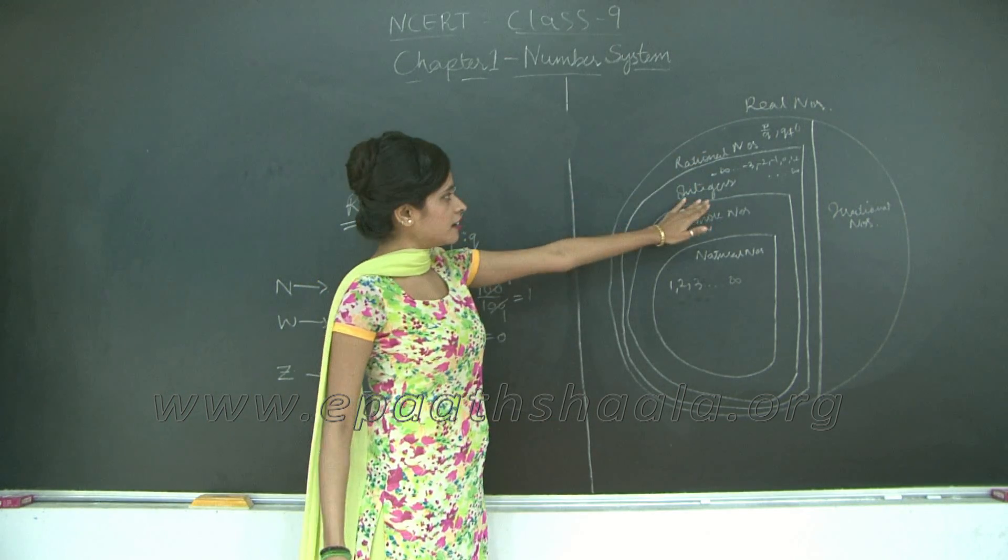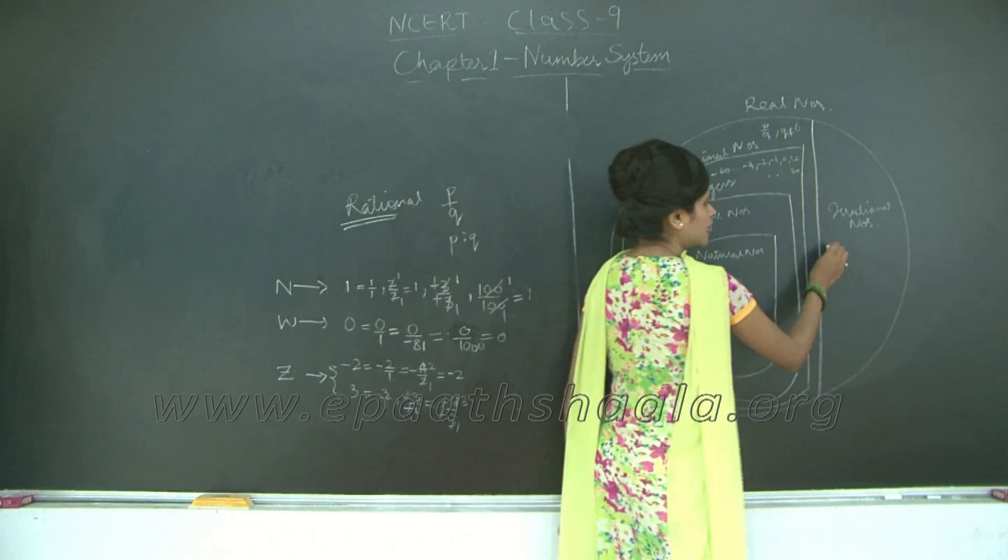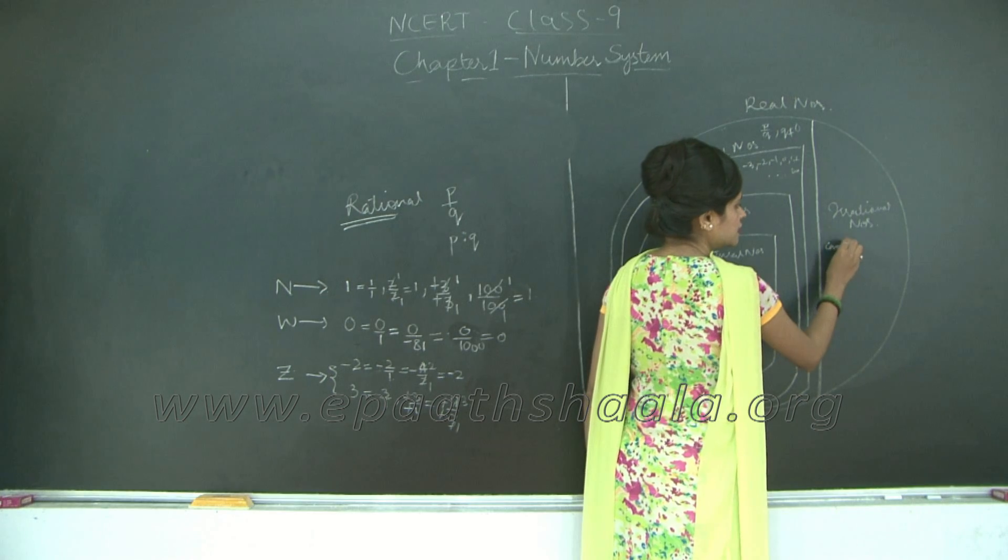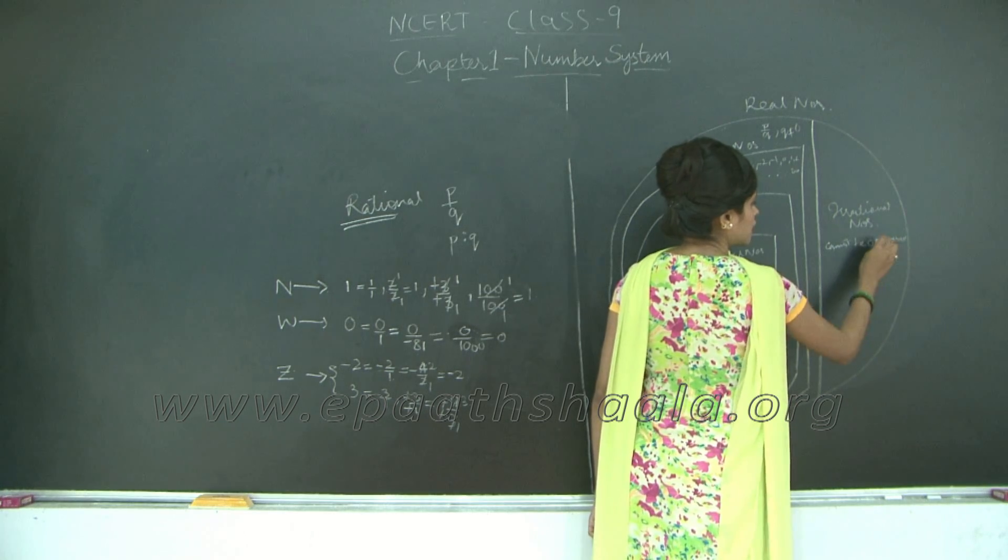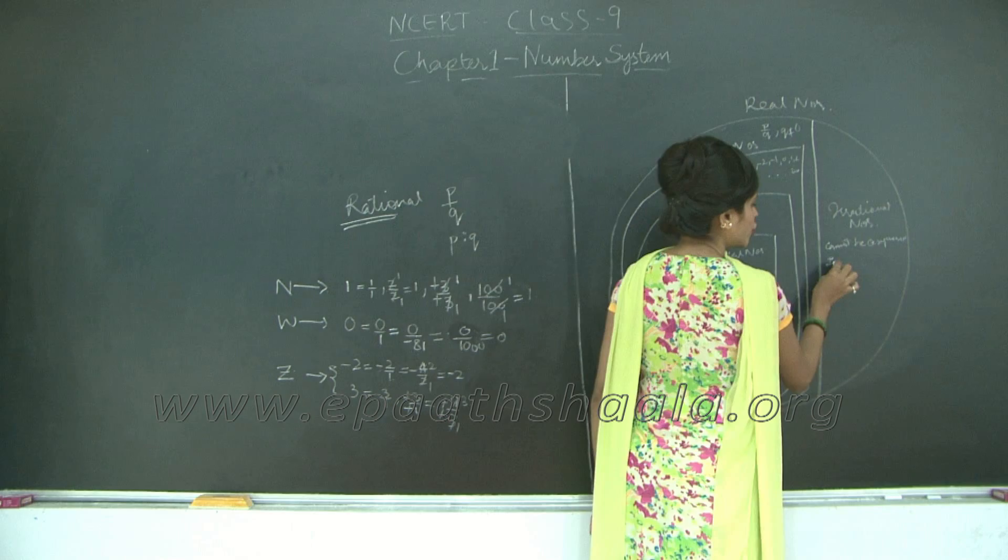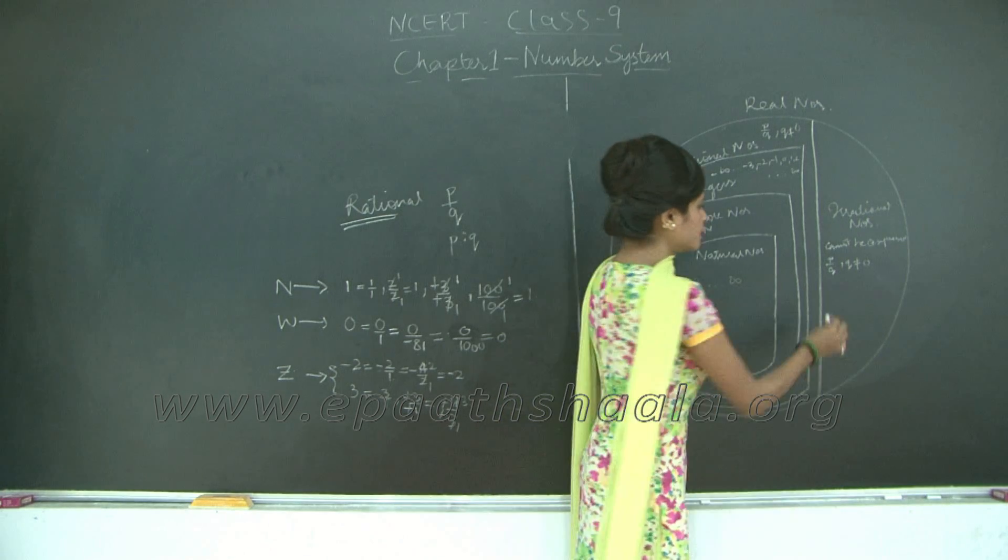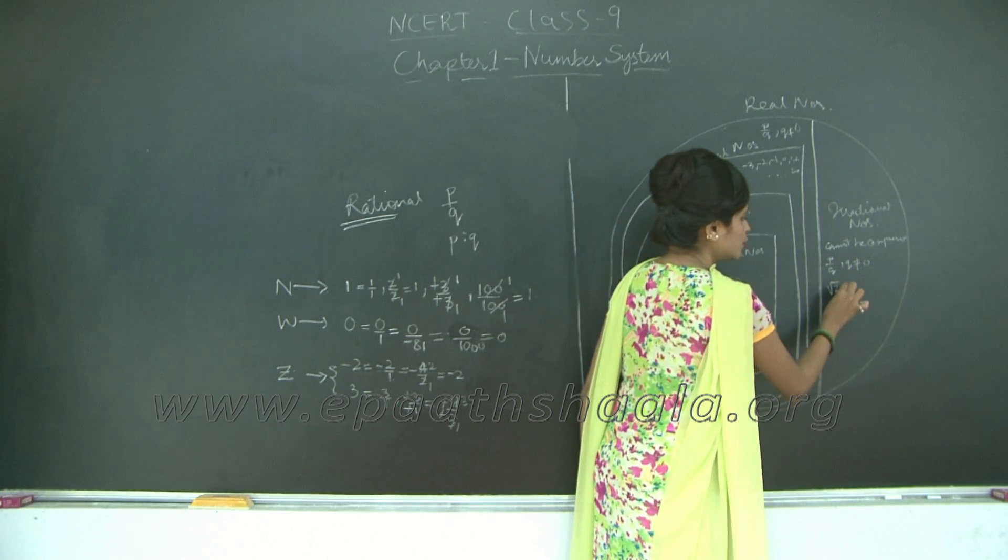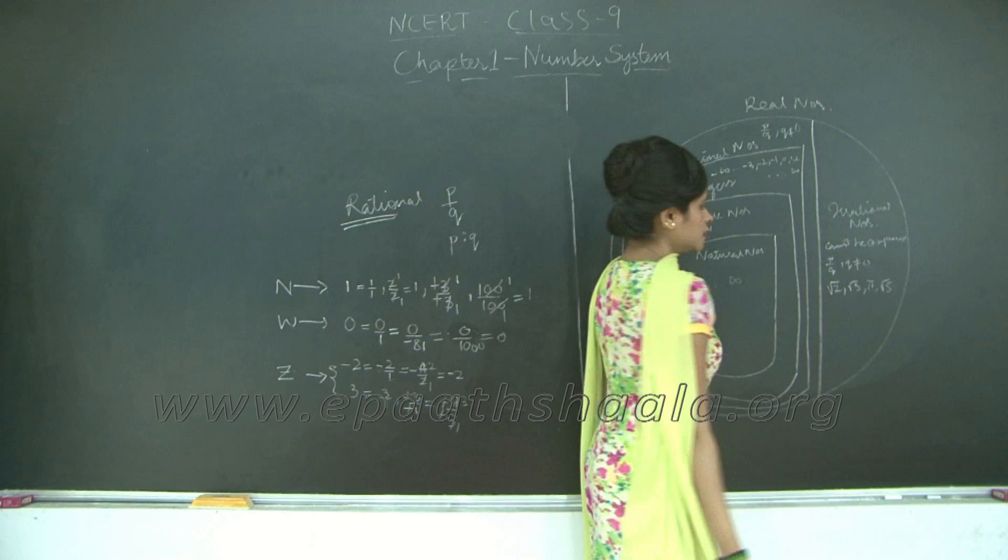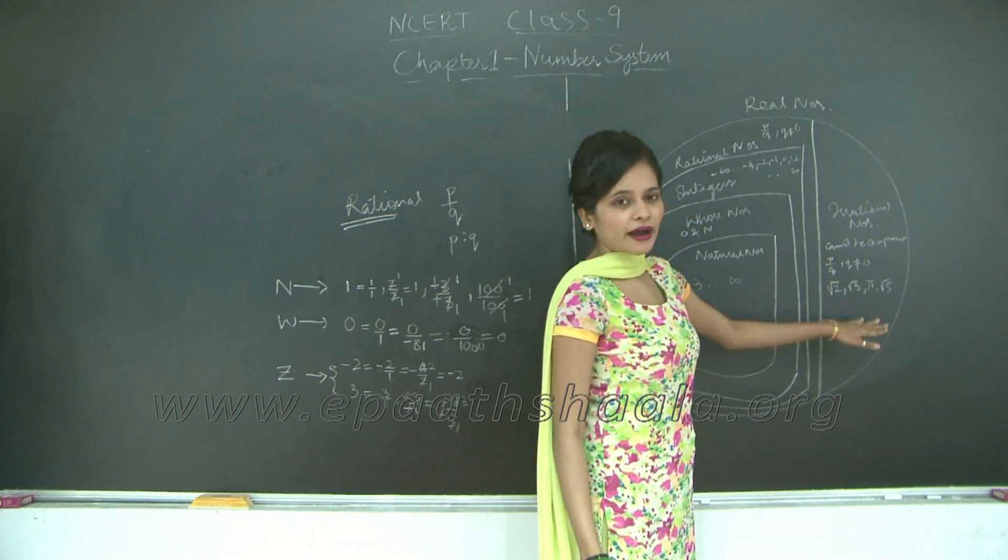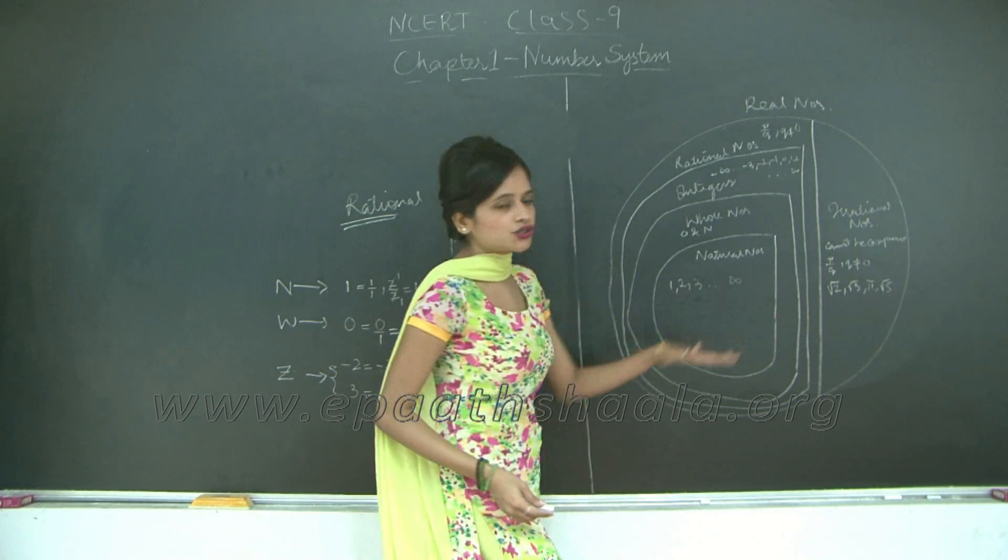Now irrational numbers cannot be represented or cannot be expressed in the form of p upon q where q is not equal to 0. Examples would be root 2, root 3, pi. Basically squares of prime numbers or pi and there are many other numbers which we will see as we proceed with the chapter. These are just examples.